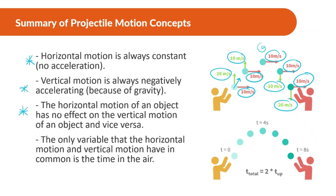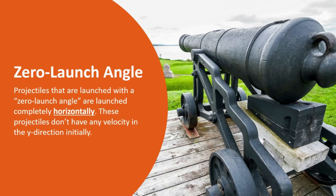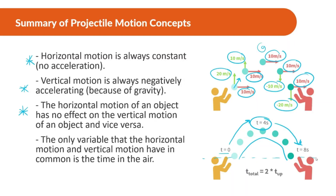The only variable that horizontal and vertical motion share is the time the object is in the air. Just like free fall, if something reaches its apex, it takes the same amount of time to come back down as it took to go up. If it takes four seconds to reach the top, it takes four seconds to come back to where it was thrown from. Thanks for watching everyone — we'll be doing more mathematical problems with the zero launch angle topic soon.